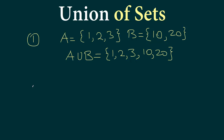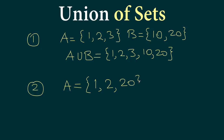For the second example, let's take set A as {1, 2, 20} — so the third element is 20 — and let's keep set B the same as {10, 20}.